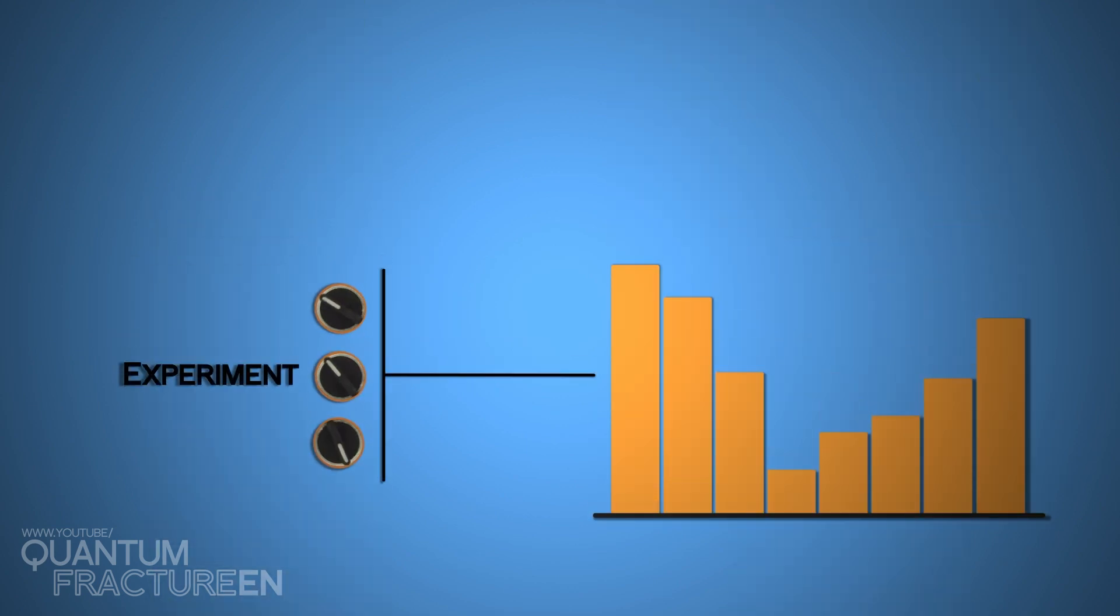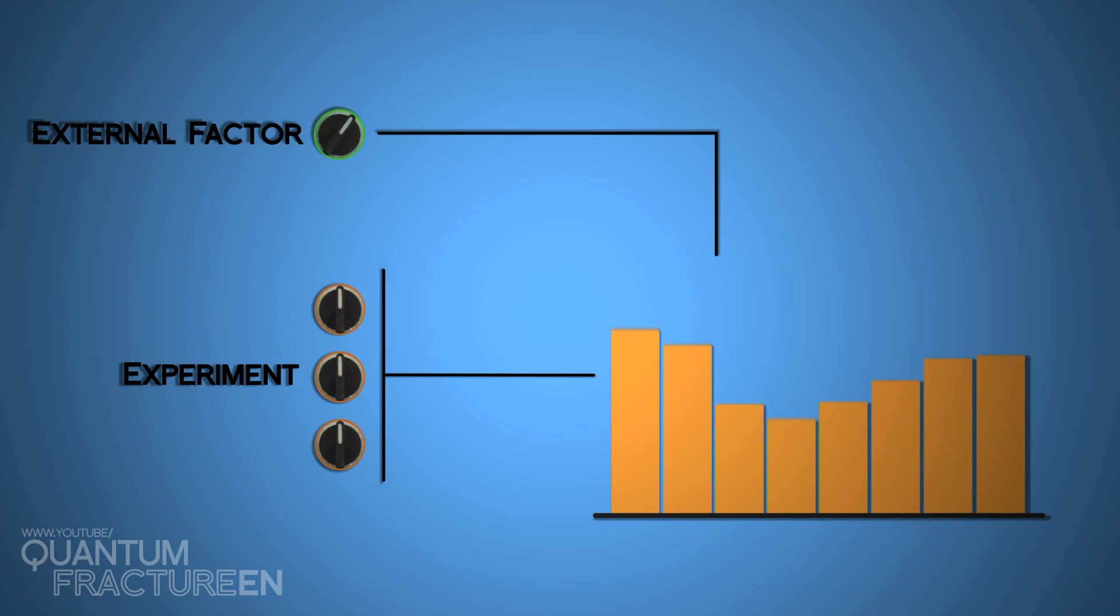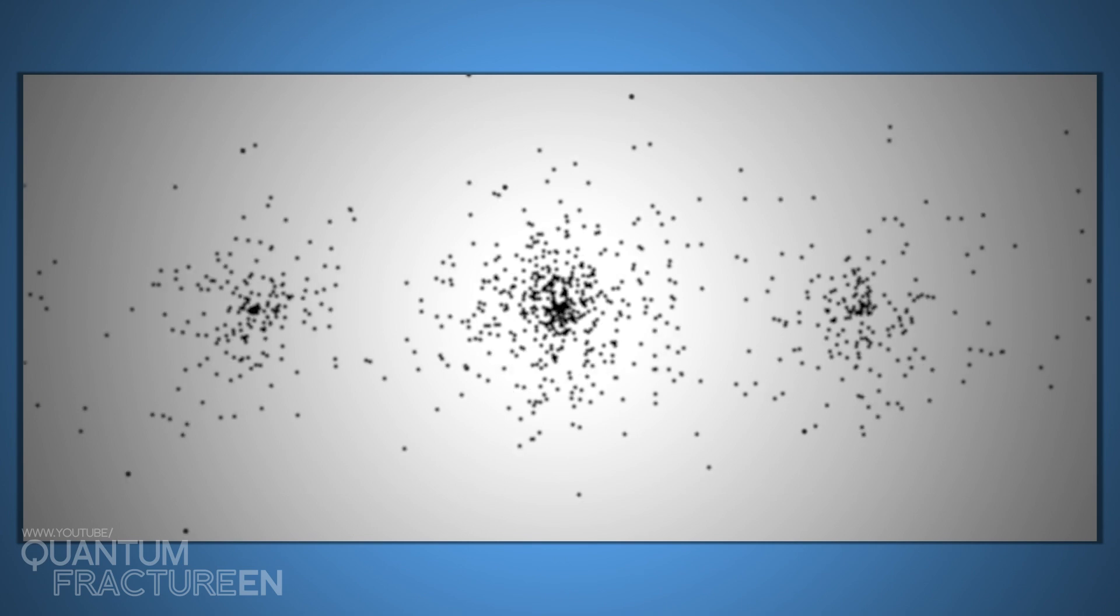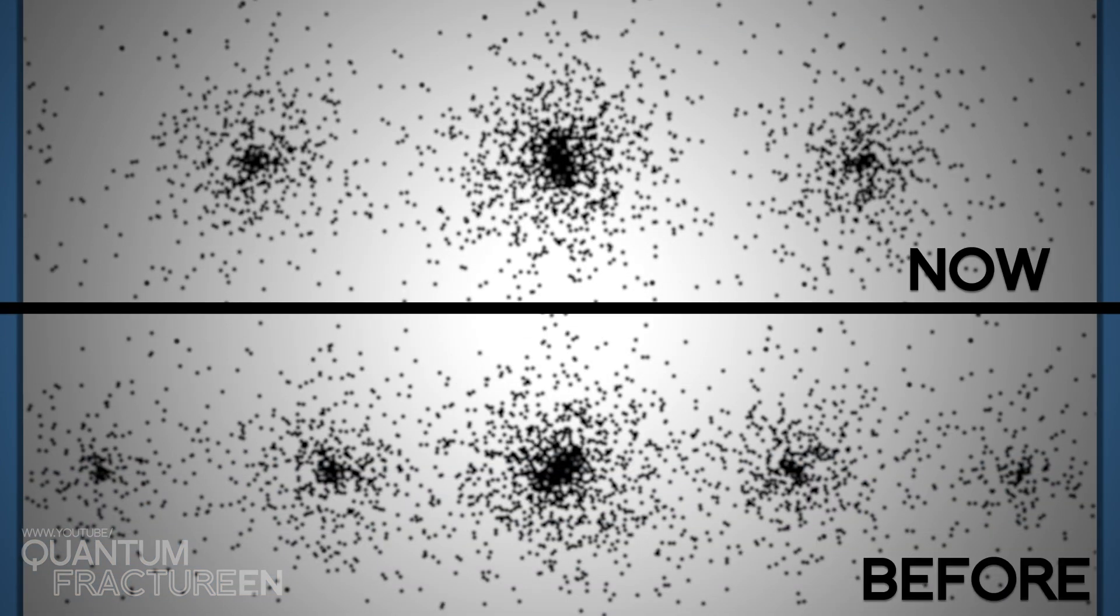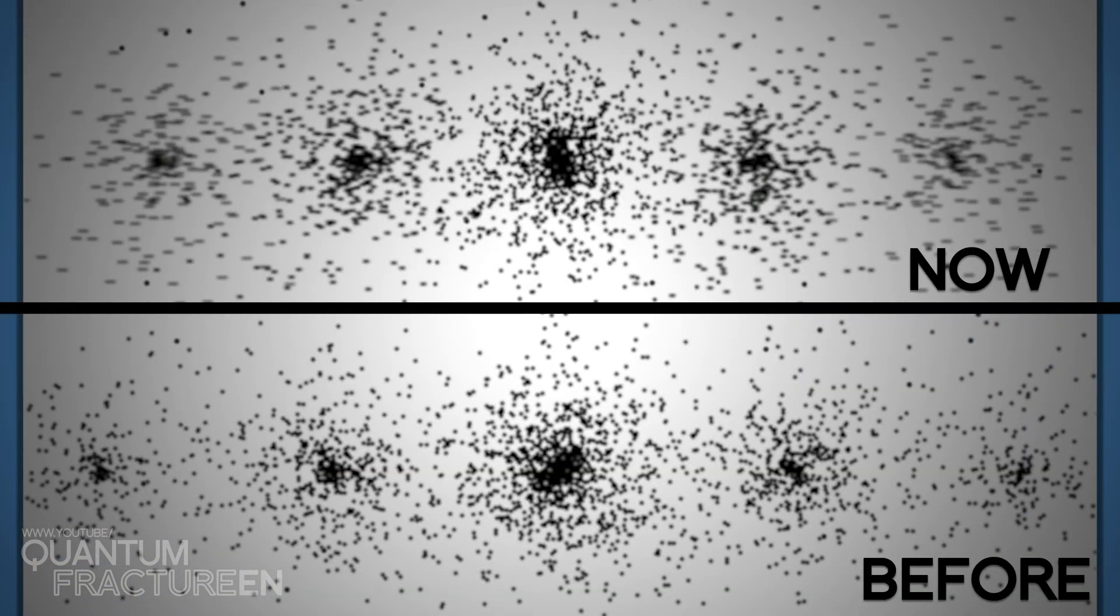If you change something in your experiment and the outcome doesn't vary, that's a pretty clear sign that some external factor is influencing those results. But that wasn't the case here. When they separated the boxes and repeated the experiment, the same pattern appeared, only the clusters were farther apart. They moved the boxes closer together and the pattern followed suit.